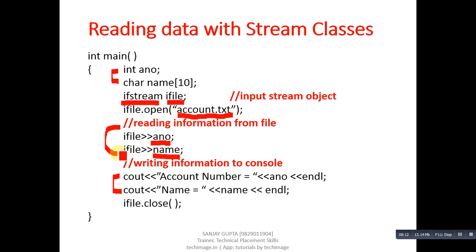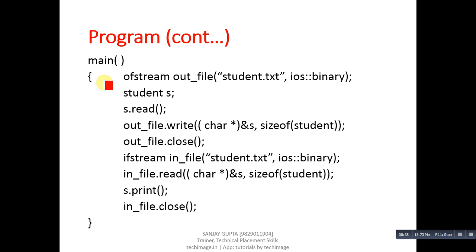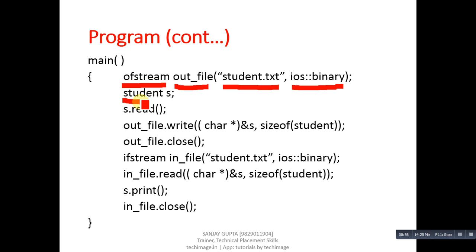This next program demonstrates reading and writing objects. A simple class contains roll number and name as attributes, along with read and print functions. To write an object to a file: ofstream class, outfile object, student.txt as file name opened in binary mode. An object of the student class is created, then s.read reads information from console, and outfile.write stores the information into the file.